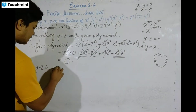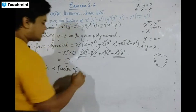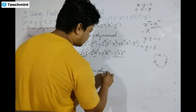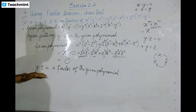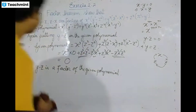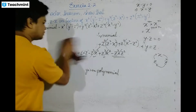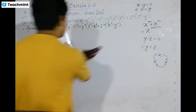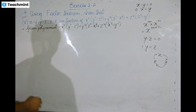The result is zero, therefore (y minus z) is a factor of the given polynomial. Similarly, (z minus x) is also a factor.